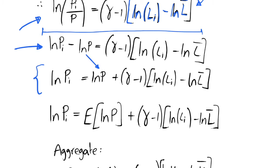In setting its own price level, firm i has to form expectations of the aggregate price level. We assume the firm doesn't know exactly what the economy-wide price level will be — in period t minus one, the firm must make some expectation about the price level in period t. This is realistic because a firm won't necessarily know what price every other firm will set in a given period, so it has to make some prediction, which is why we have the expectations operator here.